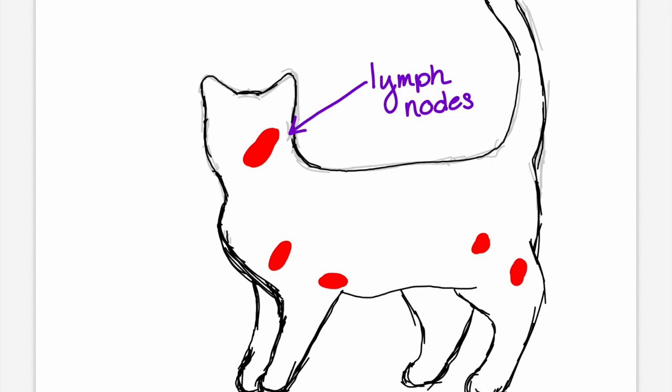The lymph nodes located in the neck, chest, armpits, groin, and behind the knees are often the most visible and easy to observe.